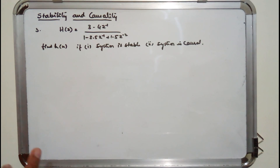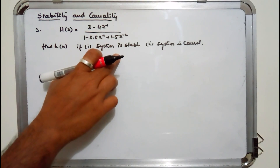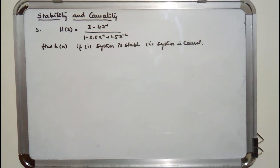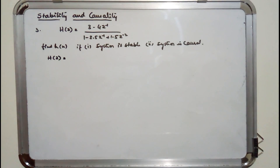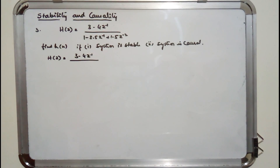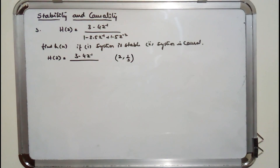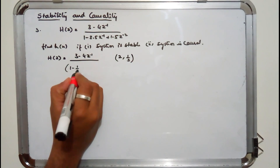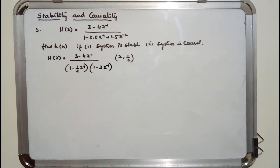In this problem, we are not asked whether the system is stable and causal together — instead we must find h(n) individually for two conditions: (1) if the system is stable, and (2) if the system is causal. Factorizing the denominator gives roots at z = 2 and z = 1/3, so in z-inverse form the denominator is (1 − (1/2)z⁻¹)(1 − 3z⁻¹).